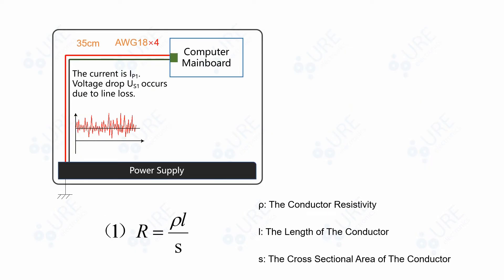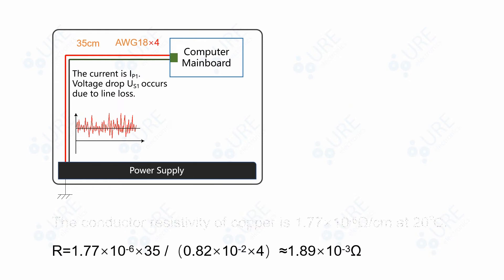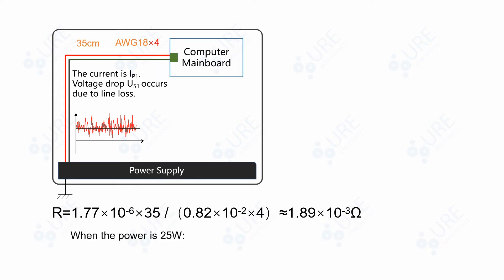And we usually use ATX 8-pin cable to power the CPU. According to equation 1, the resistance can be figured out. When the power is 25 watts, the voltage drop is calculated as follows. When the power reaches 118.75 watts, we can get a larger voltage drop too.